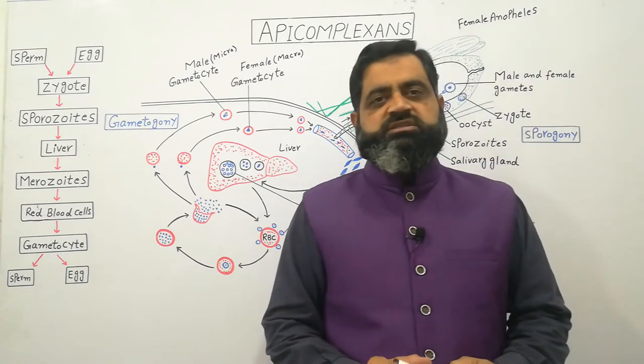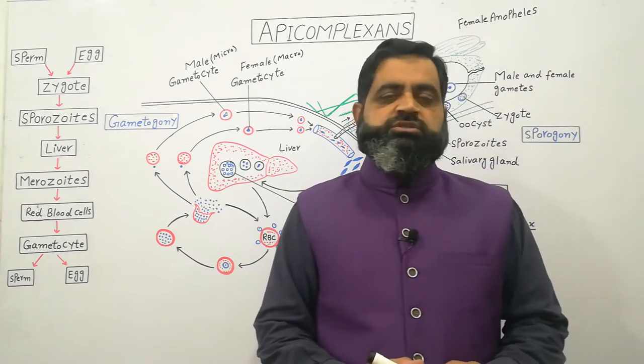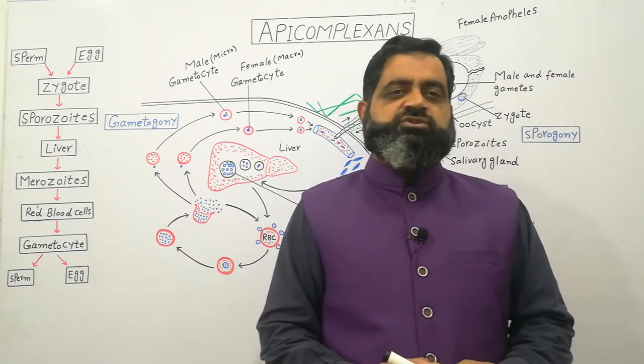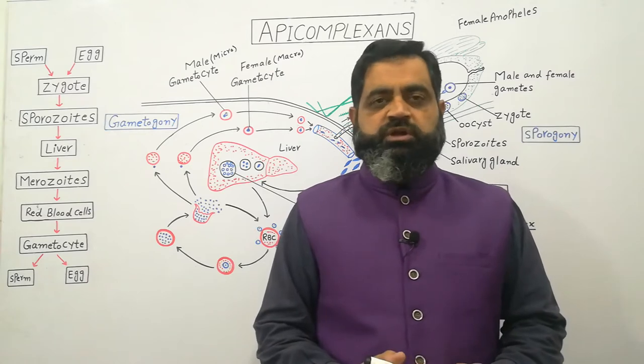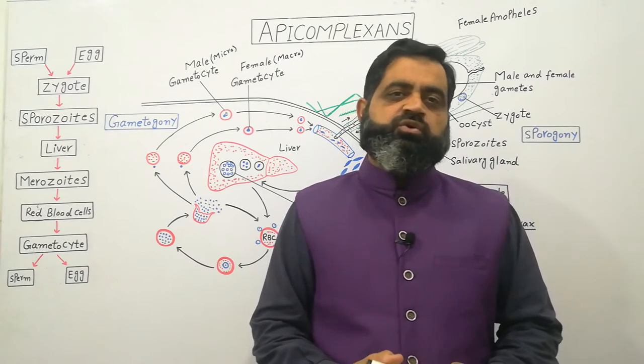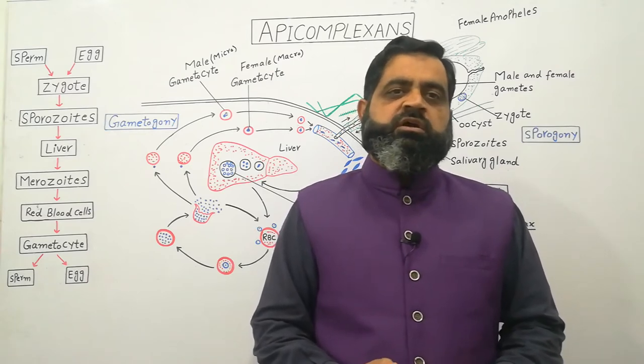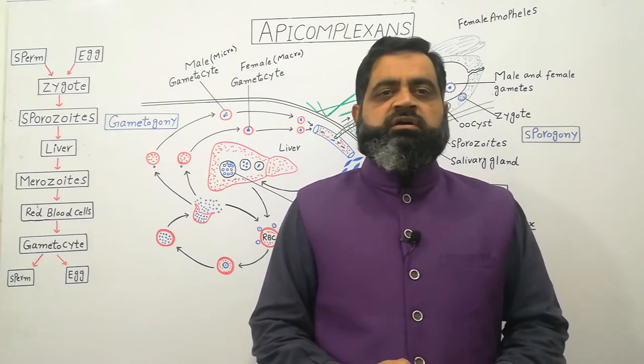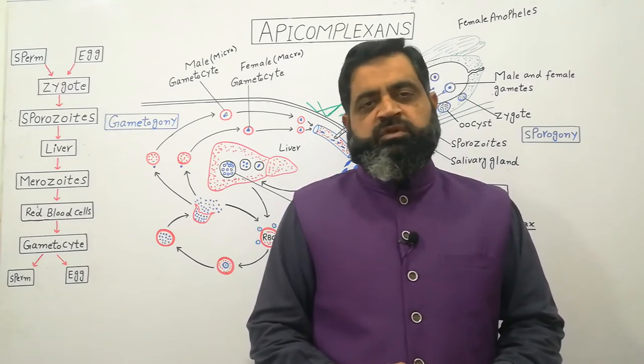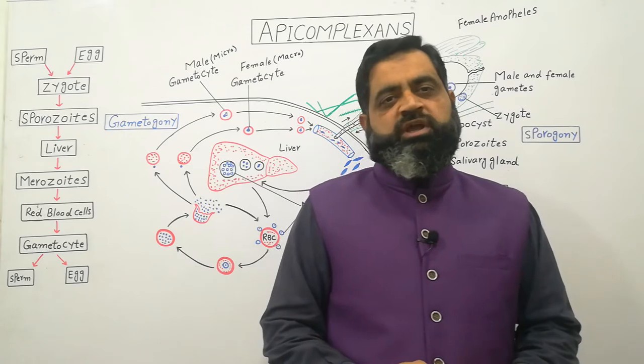Plasmodium vivax has two hosts. The first host is human and the second host is the mosquito — specifically the Anopheles mosquito.